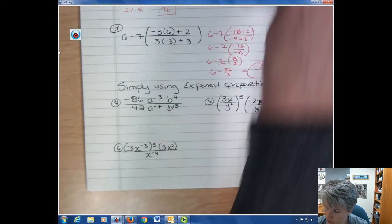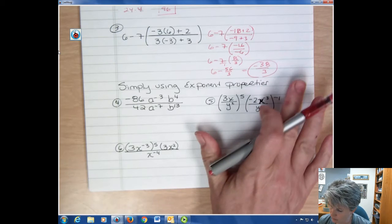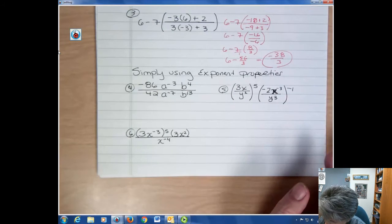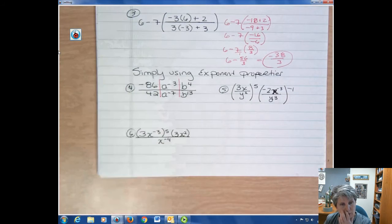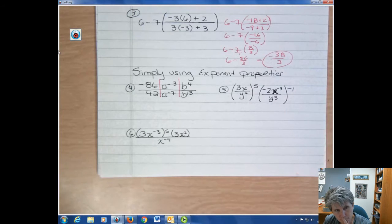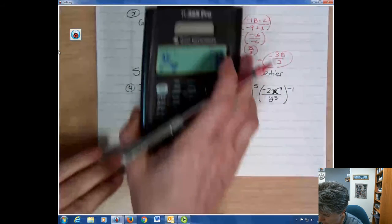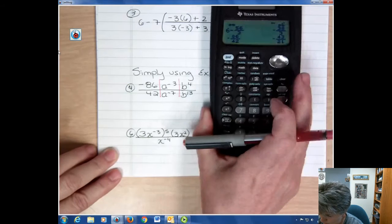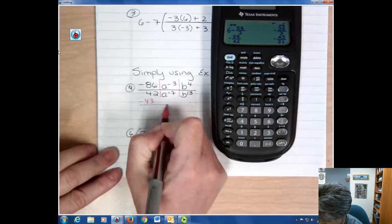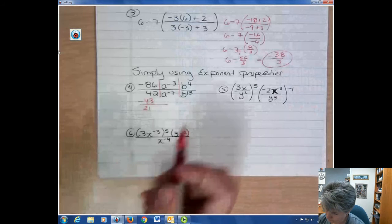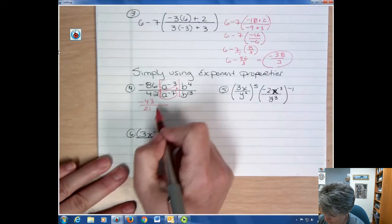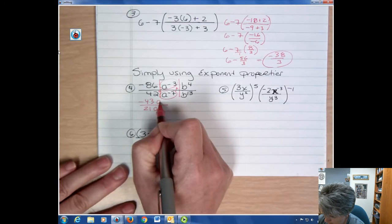The other thing that's sort of challenging for students in this chapter is the negative exponents. We're going to simplify some expressions that have negative exponents in them. First of all, when you see a problem like number 4, you're going to think of that as the numbers and then the A's and then the B's. The numbers are easy because negative 86 over 42, you can just put it in your calculator and simplify that, or you can divide by the common denominator. But it's going to be negative 43 over 21. They have a common factor of 2. And then what happens to these variables? Well, if they have an exponent that's negative, they've got to change places in the fraction.